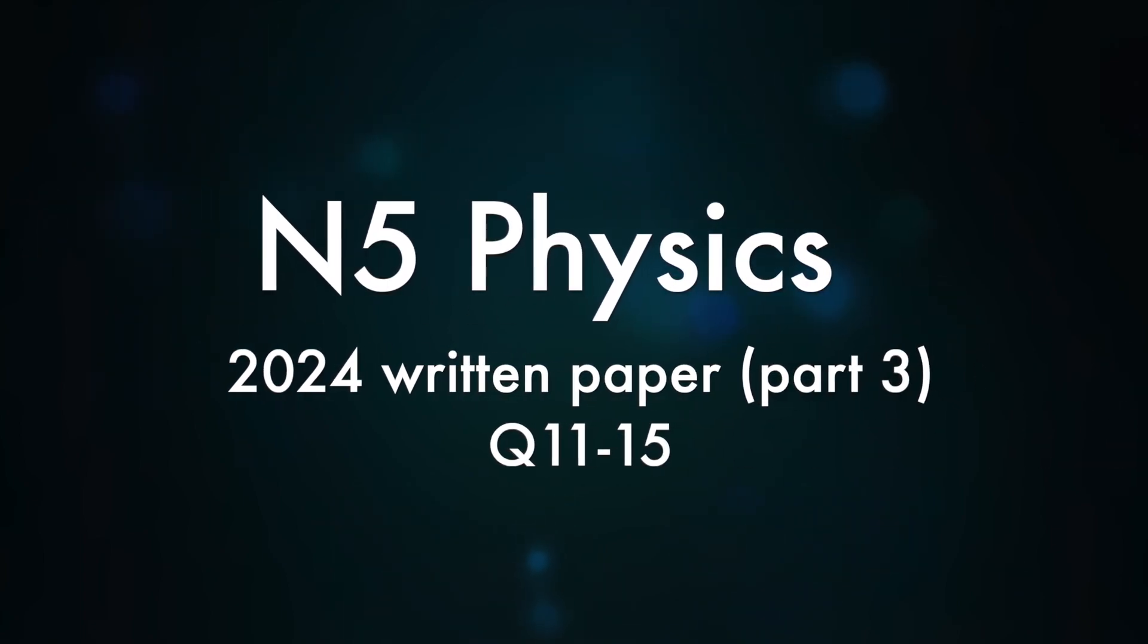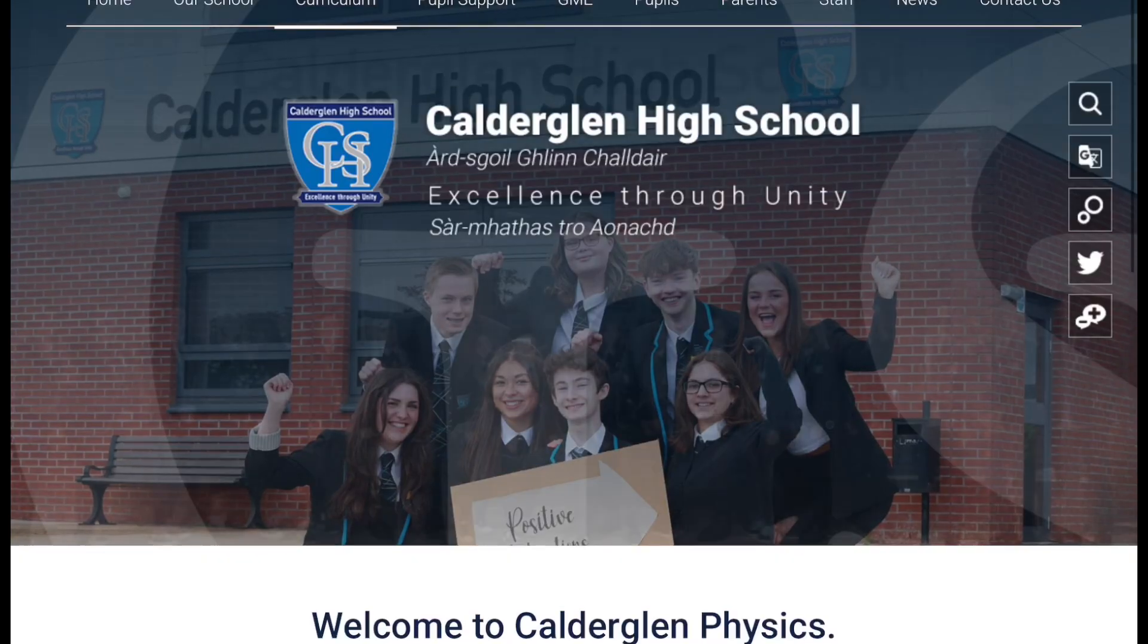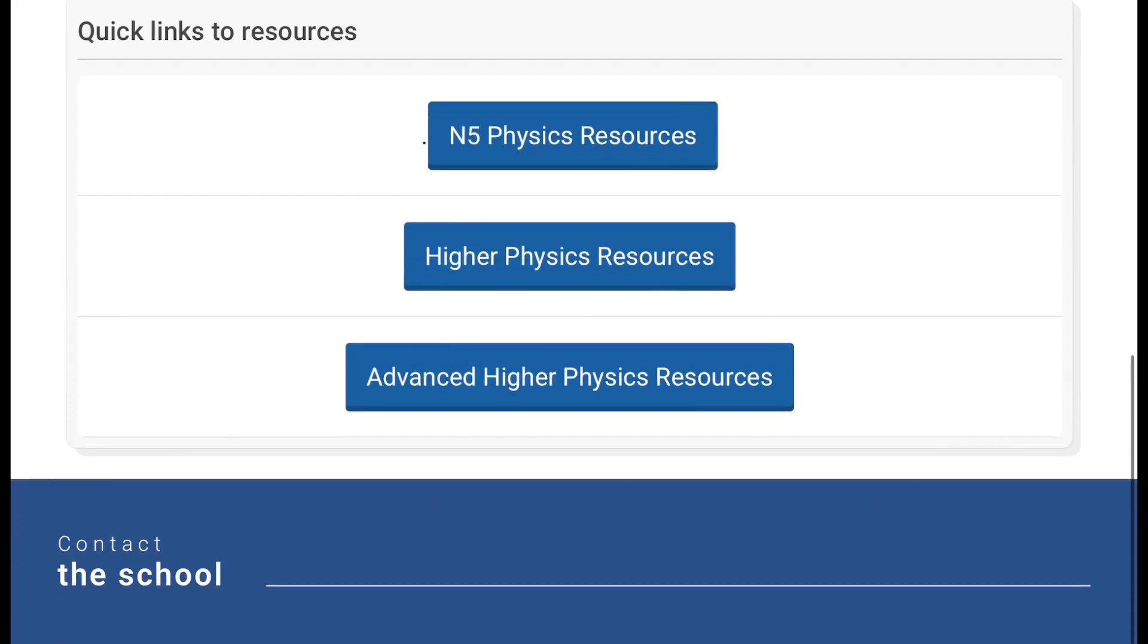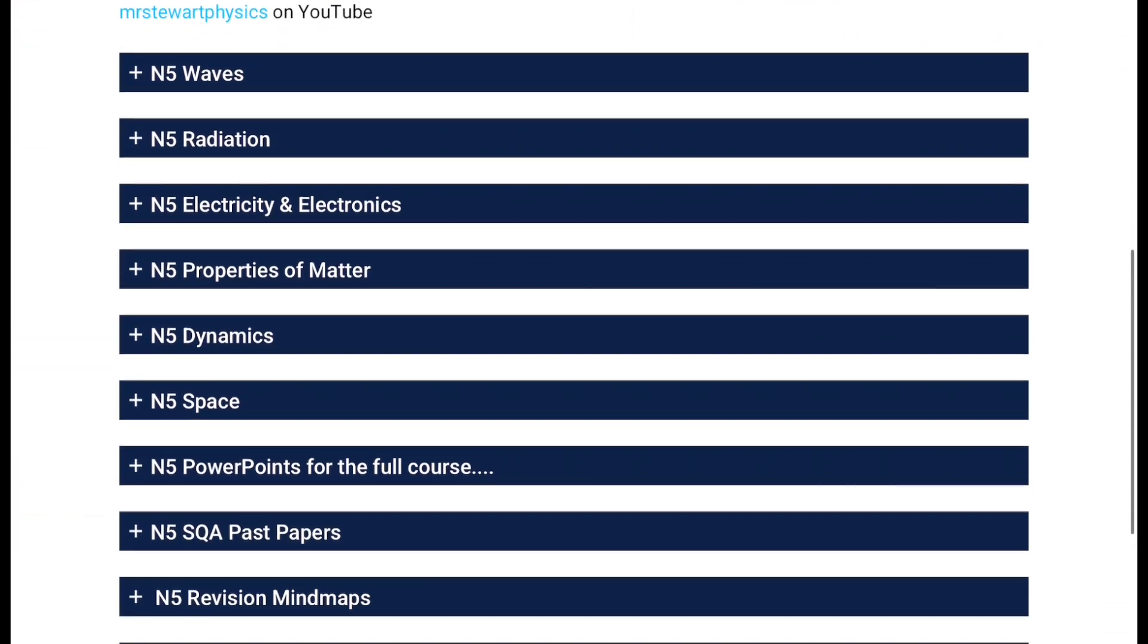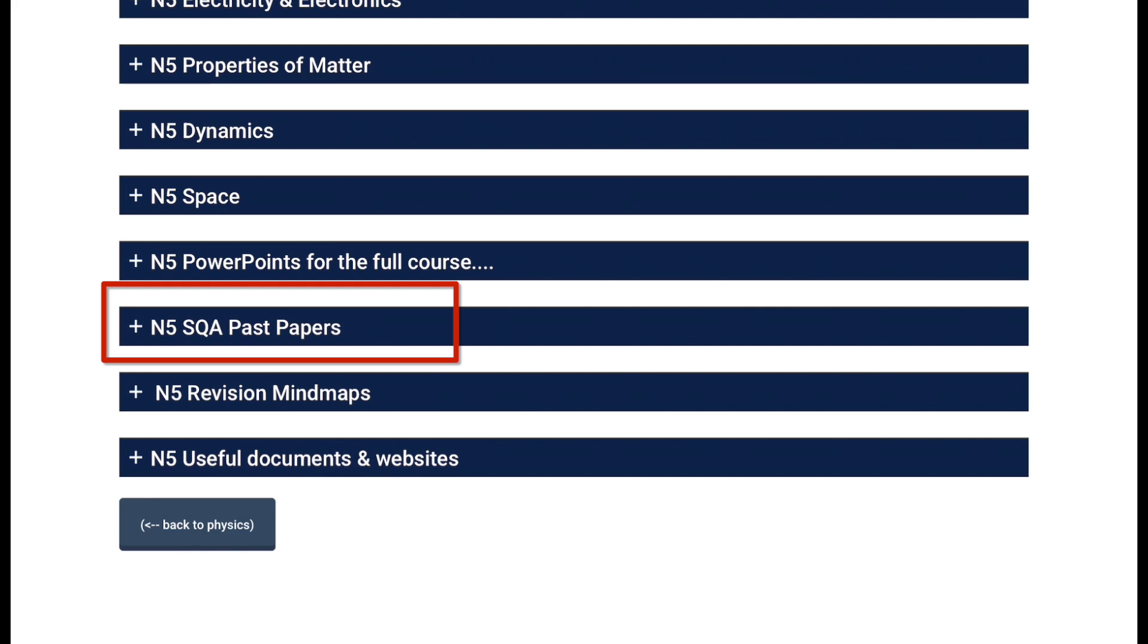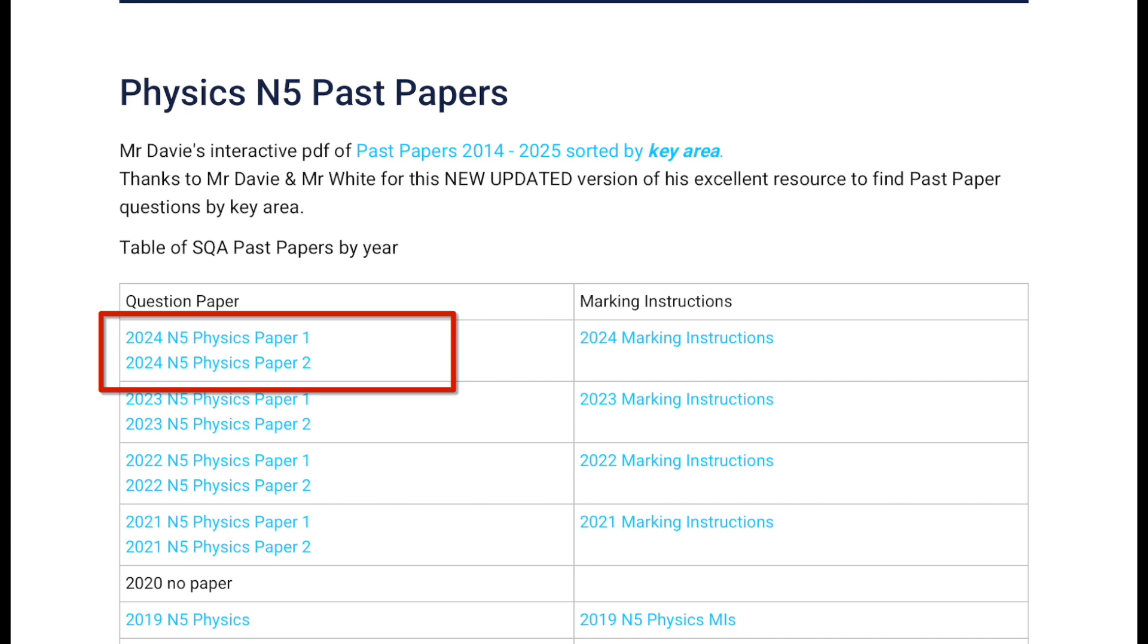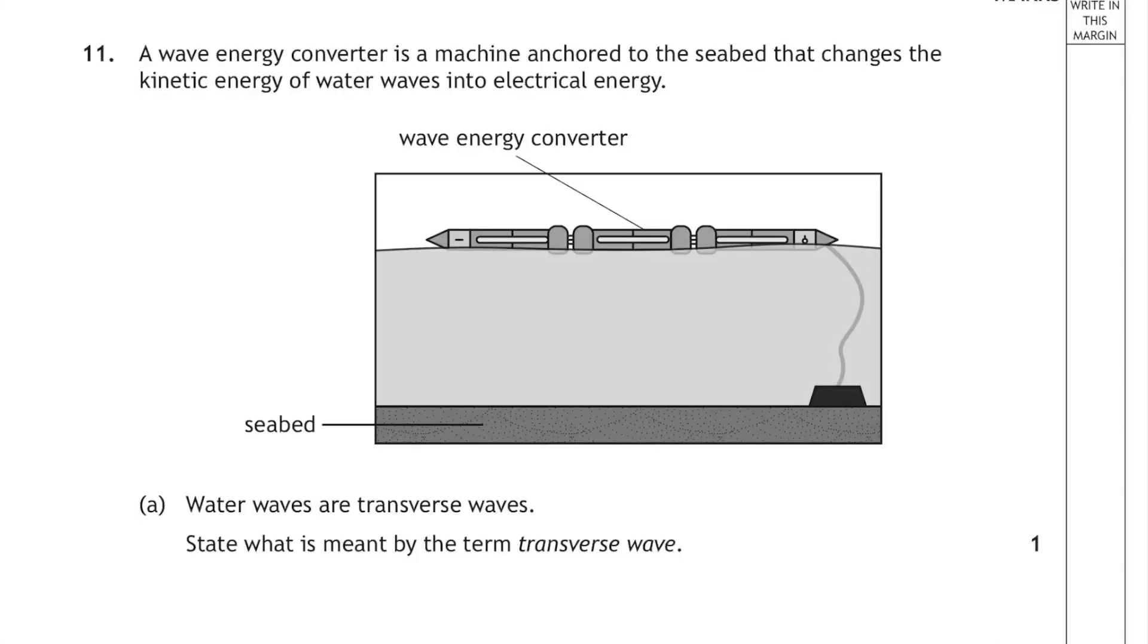Hi folks, this is the last part, part 3 of our series looking at the 2024 National 5 Physics written paper, that's section 2. As usual we're going to the Calder Glen High School physics webpage, clicking on National 5 Physics Resources, and scrolling down until we see National 5 SQA past papers. Make sure you click on paper 2. Remember the whole paper is 2 and a half hours, so I've done the multiple choice in a separate video, and we've looked at the written questions in section 2 over 3 separate videos. This is the last part, and we're starting at question 11.